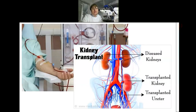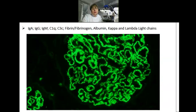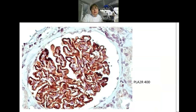Here you can see the list of antibodies that we use in our everyday practice. Routinely, we do direct immunofluorescence on frozen sections. In this picture, you can see IgG granular expression — the diagnosis in this case was membranous glomerulopathy. In membranous glomerulopathies, we also use immunohistochemical staining for PLA2R and THSD7A to identify primary membranous versus secondary membranous glomerulopathies.